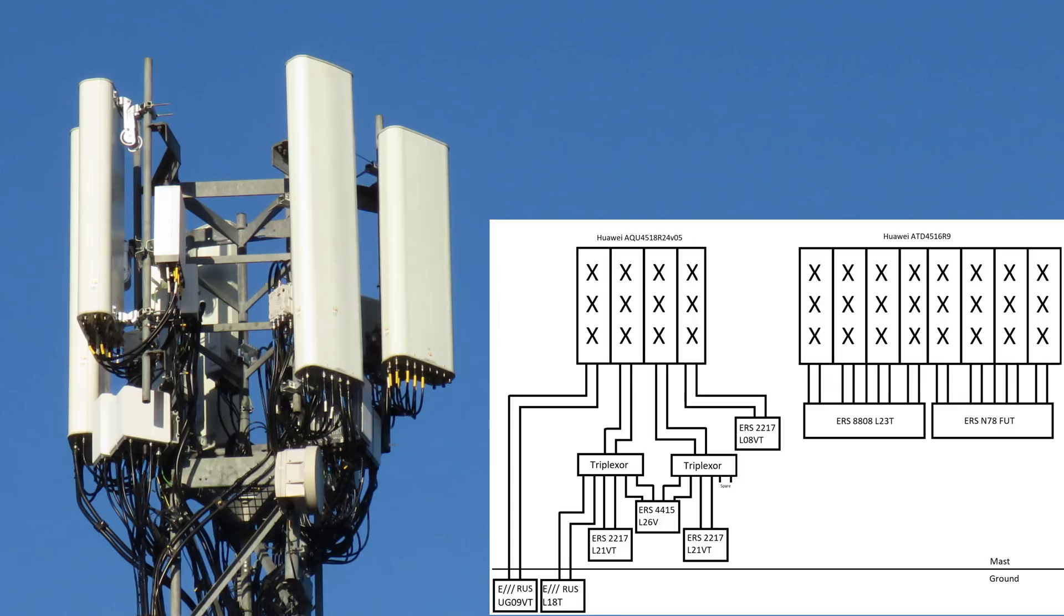Meanwhile each of the high ports go to a triplexer where each triplexer has ports for 1800, 2100 and 2600. So on the first triplexer on this schematic O2's 1800 megahertz comes in from the ground and then it's complemented with 2100 megahertz 2T2R or two of the transmit and two of the receive of the overall 2100 megahertz system from an ERS 2217.